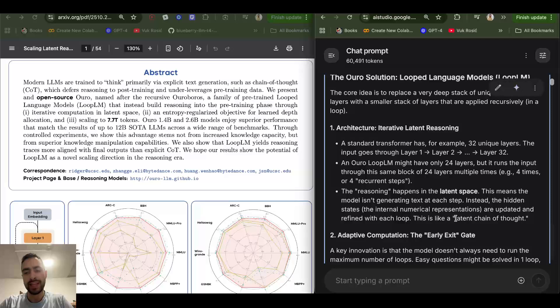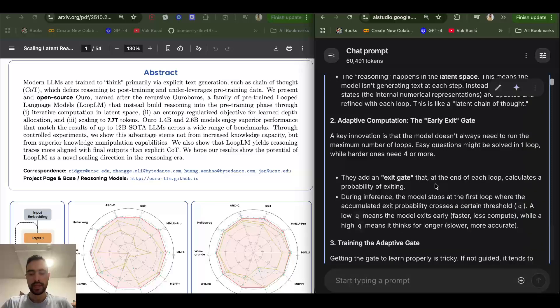So they compare this to a latent chain of thought. At the end of each loop of 24 layers, so at the end of one pass, there is this exit gate that will determine if the next token will be generated, if the reasoning process will stop or it will go back again through the layers. This parameter Q is a threshold, a number, and if the probability of exiting is higher than this threshold it will exit, it will generate the next token. And if the probability is lower, then it will loop again until the probability is higher than the threshold Q.